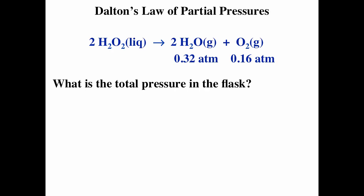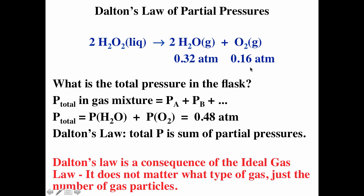We can see Dalton's law in action: hydrogen peroxide breaks down into water vapor and oxygen gas, so the total pressure is the sum of the partial pressures. With partial pressures of 0.32 and 0.16, the total pressure is 0.48. Dalton's law is a consequence of ideal gas law — the identity of the gas doesn't matter, but the gas must behave ideally.